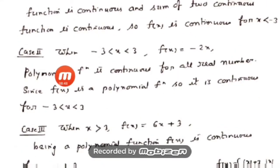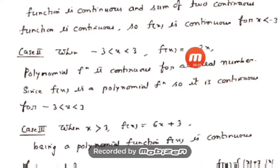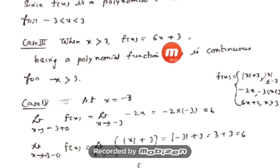Case 2: for x in the interval (−3, 3), the function is defined by f(x) = −2x, which is a polynomial function. Since a polynomial function is continuous for all real numbers, f is continuous for all −3 < x < 3. Case 3: for x greater than 3, f(x) = 6x + 2, also a polynomial function, so f is continuous for all x greater than 3.